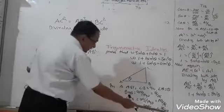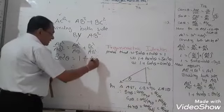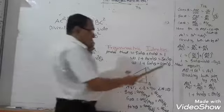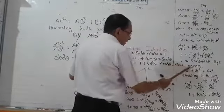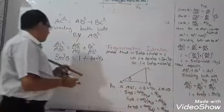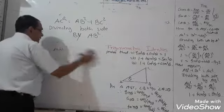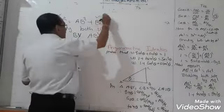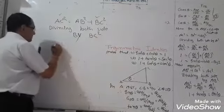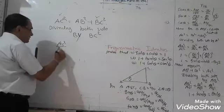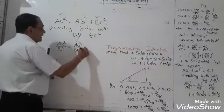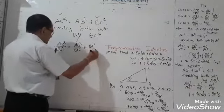Third time, dividing both sides by BC²: AC²/BC² equals AB²/BC² plus BC²/BC². AC/BC is cosec θ, so AC²/BC² is cosec²θ. AB/BC is cot θ, so AB²/BC² is cot²θ. Therefore, cosec²θ is equal to 1 plus cot²θ.